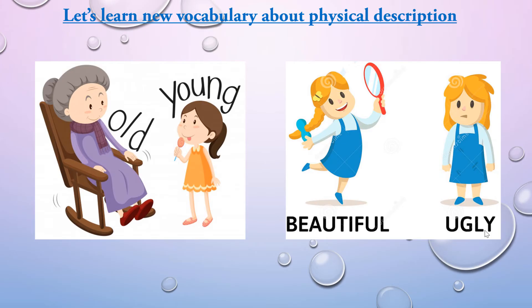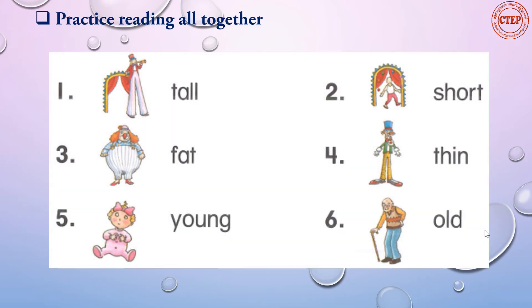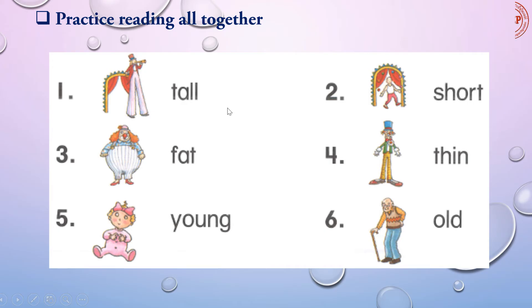There are so many physical description words. Let's practice reading them together again — the six words: tall, short, fat, thin, young, old. These physical descriptions can be opposites. For example: tall is the opposite of short, fat is the opposite of thin, and young is the opposite of old.